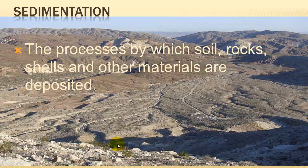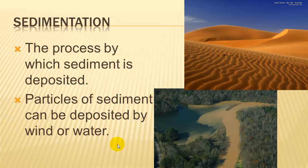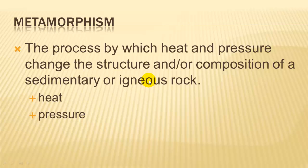Sedimentation is the process by which rocks, soil, shells, and other materials are deposited back onto Earth's surface. Particles of sediment can be deposited by wind or by water. Metamorphism is the last process we need to know about. It's the process by which heat and pressure change the structure — how it looks — and the composition, meaning the types of minerals it contains, of sedimentary or igneous rock. Heat and pressure are the agents of metamorphism.